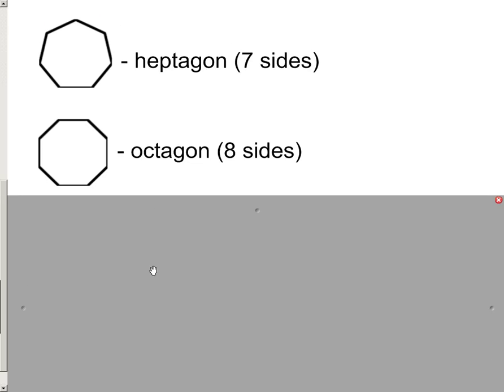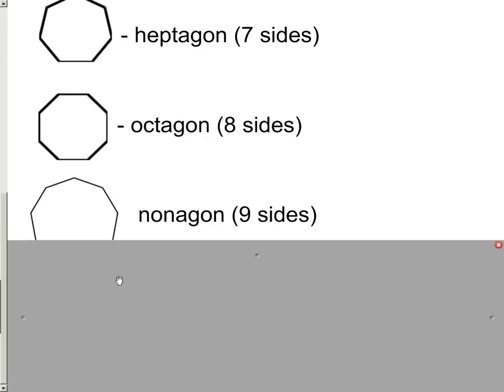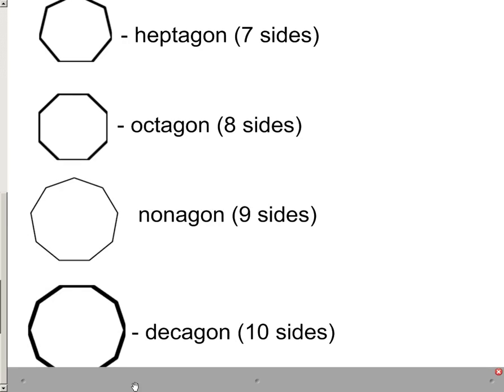That looks just like a stop sign. Nine sides would be a nonagon. We'll stop at ten. We'll just call this one a decagon, because deca means ten sides. So that's this whole lesson in a nutshell.